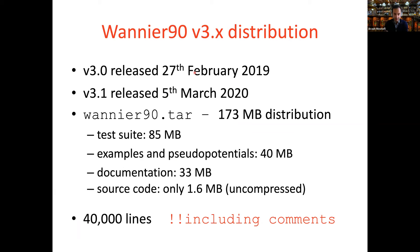We are now at Wannier release version 3.1, which was released just a few weeks ago. This was a little update on the main Wannier 3.0 release from last year. Just a few statistics on the distribution: it is 173 megabytes in size, which is relatively large — but most of it is the test suite and examples. We have quite an extensive library of tutorial examples and documentation, and the source code is actually only 1.6 megabytes uncompressed, which is around 40,000 lines of code including comments.